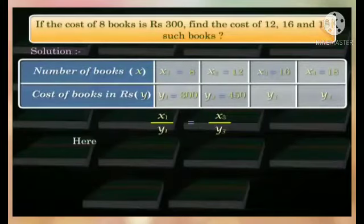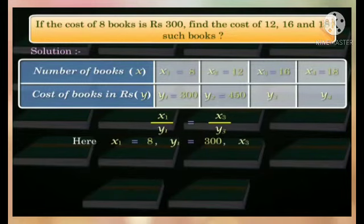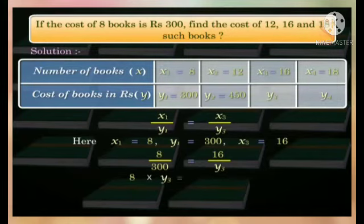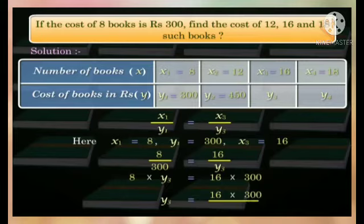Here, x1 = 8, y1 = 300, and x3 = 16. We need to find y3. Substituting in the relation, we get 8/300 = 16/y3. Cross-multiplying, 8×y3 = 16×300. Therefore, y3 = (16×300)/8 = 600.